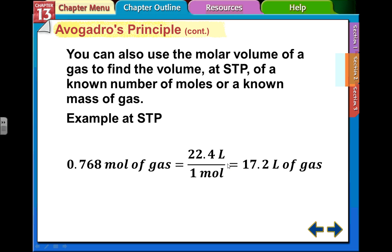If we know the moles, then we're going to flip that conversion over. We're going to have 22.4 liters in every mole. The moles cancel out here. So we're going to multiply 22.4 times the 0.768, and you get 17.2 liters of gas.